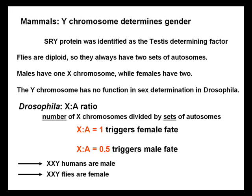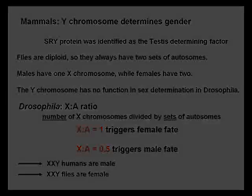The males have one X chromosome while the females have two. The Y chromosome has no functional sex determination in Drosophila. Instead, the number of X chromosomes divided by the sets of autosomes determines sex. An X:A ratio of 1 triggers the female fate; an X:A ratio of 0.5 triggers the male fate. XXY humans are male, XXY flies are female.